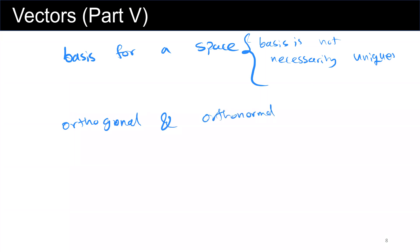This was the last part of vectors. We talked about basis for a space. We mentioned that basis is not necessarily unique; there could be multiple bases for a given space. Then we talked about orthogonal and orthonormal vectors.